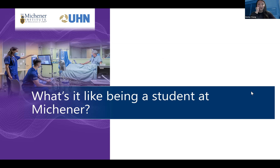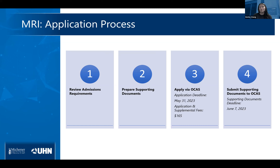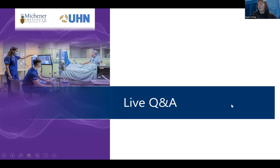The MRI application process is different from full-time programs. First, review admission requirements and ensure you qualify. Second, prepare supporting documents including transcripts and proof of licensing. Third, apply through OCAS — the deadline is May 31st, 2023, with a $165 application and supplemental fee. Finally, submit supporting documents to OCAS by June 7th, 2023.